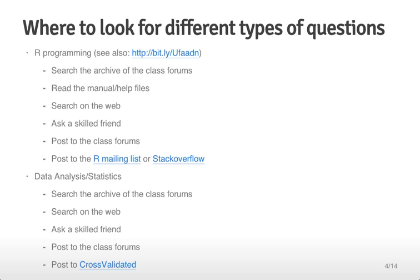Here are some resources on where you can look for different types of questions that you might have. For R programming, I've linked here to the lectures from Roger's Computing for Data Analysis class that cover a lot of the background material you might be interested in. You can also search the archive of the class forums since the questions will likely be targeted to the types of the data that you'll be seeing in class. You can read the manual or help files for the particular packages. Or you can search on the web or ask a skilled friend that's close to you or you can post a question to the class forums. Finally, if these methods fail, you can also post a question to the R Mailing List or Stack Overflow. Remember to mind etiquette for those particular mailing lists when posting questions outside of the class forums.